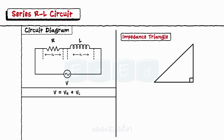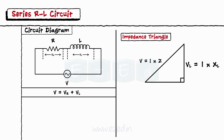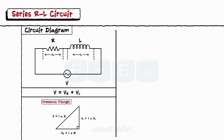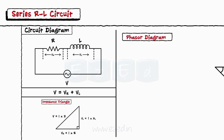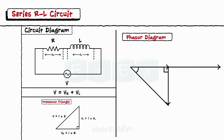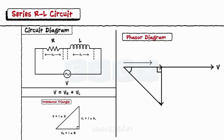Thus we get the impedance triangle for the voltages as shown. In the RL circuit, the current lags the voltage by an angle phi. Considering the voltage as a reference, we obtain the phasor with the current below the voltage at angle phi.